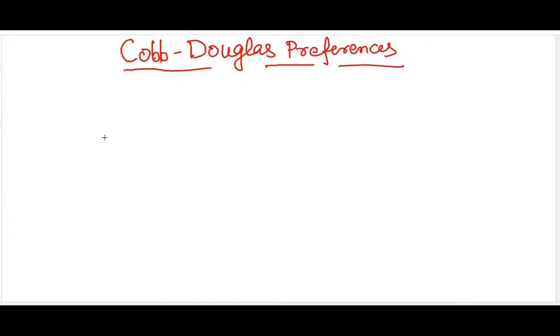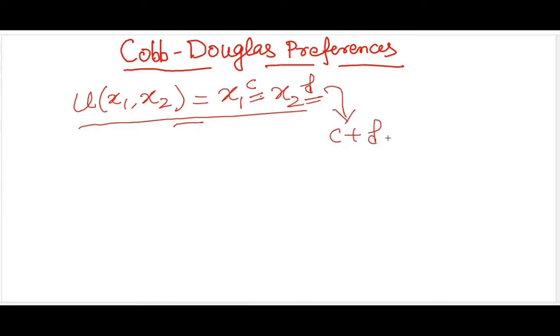Cobb-Douglas Preferences. Whenever you have a utility of two goods represented as x1 to the power c and x2 to the power d, this is your Cobb-Douglas Preferences representation. Generally, c and d are chosen such that c plus d sum up to 1. We will discuss more about this later.